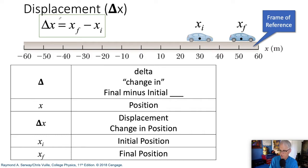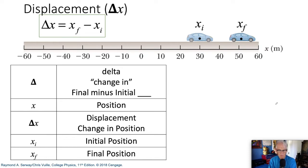The change in position is the final position minus the initial position. Let's do an example where we put some real quantities in this equation, get a feel for what it means. The beginning position here for our car is 30. Our final is 52.